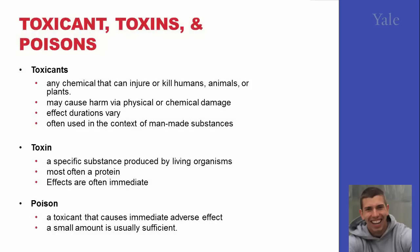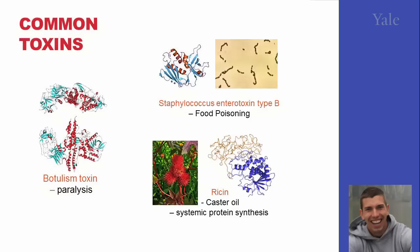Toxins are specific substances already produced by living organisms. While we don't necessarily manufacture toxins, we isolate them and use them as starting materials and intermediates. Finally, poisons are basically a type of toxin — a toxicant that causes an immediate adverse effect.